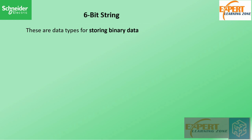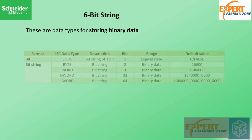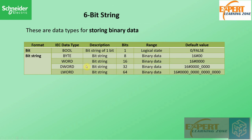Bit strings are data types for storing binary data, generally used to exchange status information with remote devices and for low-level bit manipulation of PLC hardware interfaces. The types are: BIT (BOOL) — 1 bit, with range of logical state true/false; BYTE — 8 bits; WORD — 16 bits; DWORD (double word) — 32 bits; and LWORD (long word) — 64 bits. We mostly use WORD when reading or writing analog values to output memory.